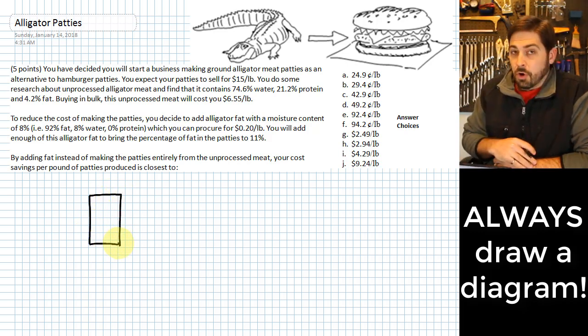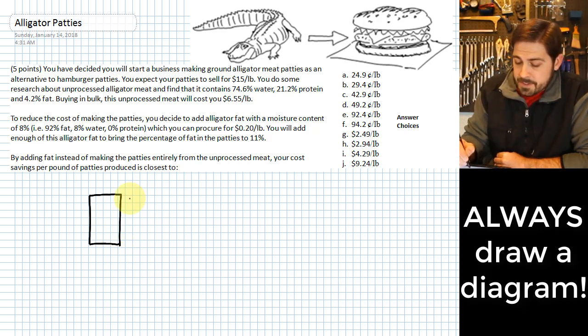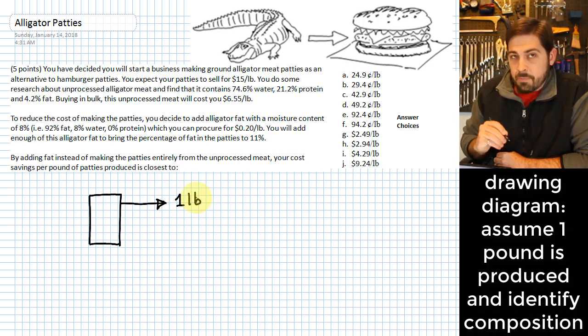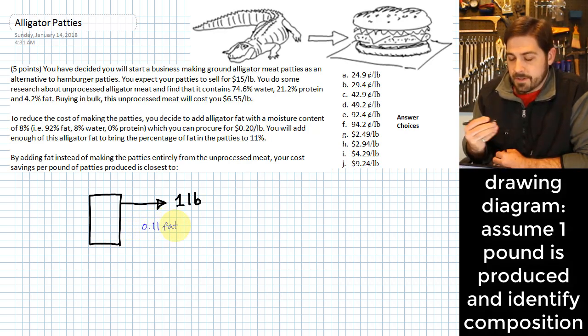I definitely think you should always do one of these diagrams because it helps you get all of your givens all down in a way that they are easy to understand. What I'm saying here is we're going to say one pound of patties produced. That way everything we come up with is going to be based on that one pound. And for that one pound of patties that we're going to produce, we know that the fat percentage is going to be 11%. So we're going to put that in at 0.11 as the fat content.